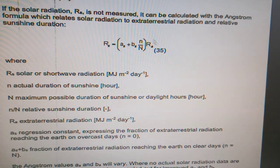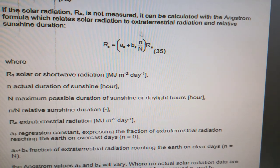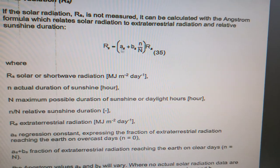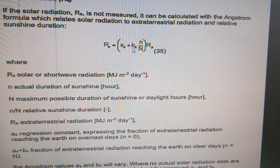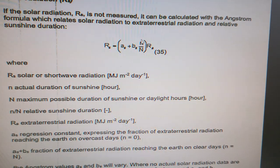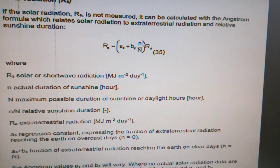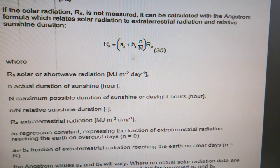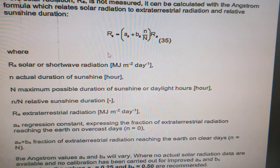You need to remember this formula. Solar radiation Rs is equal to these functions: as plus bs, and we are calculating small n and capital N. I will show you what these variables represent.